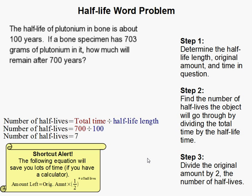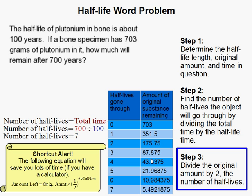Now that we know that, we can divide the original amount by two that many times. Since it has seven half-lives, we divide it in two seven times. So we start at 703, and then we divide that by two, and so on, keep dividing by two. Once you divide it by seven, that completes your answer.